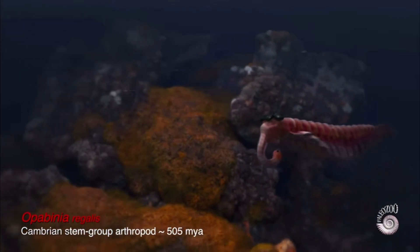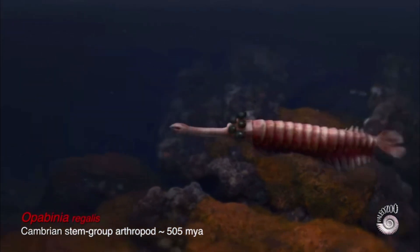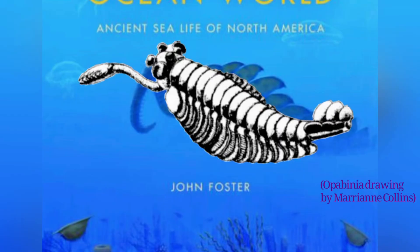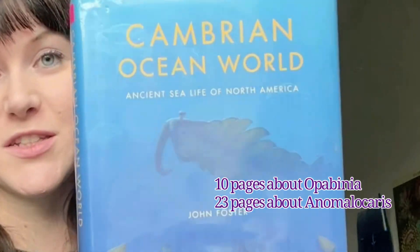This is Opabinia regalis, a marine invertebrate who lived during the Cambrian Explosion. Despite being one of the more well-known Cambrian animals, most people aren't that familiar with extinct marine life in general, and Opabinia is often overshadowed by her relative Anomalicharis, who is pictured on the actual cover of this book and many other books about the Cambrian, because for some reason people are much more enamored by Anomalicharis than by Opabinia.